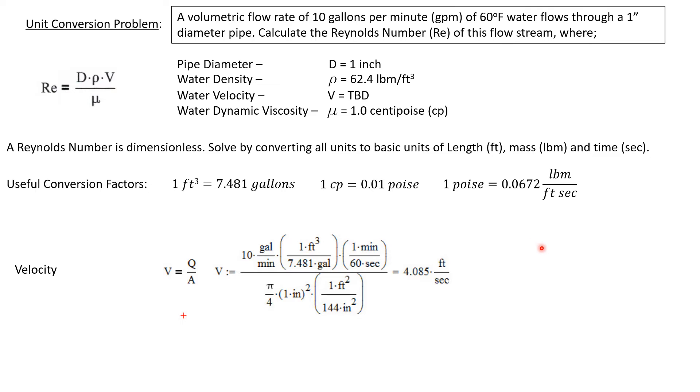Now we need to calculate the velocity. The velocity is simply the volumetric flow rate, we'll call Q, divided by the area of the pipe. And so we have a volumetric flow rate of 10 gallons per minute. Now we need to convert that to cubic feet per second.